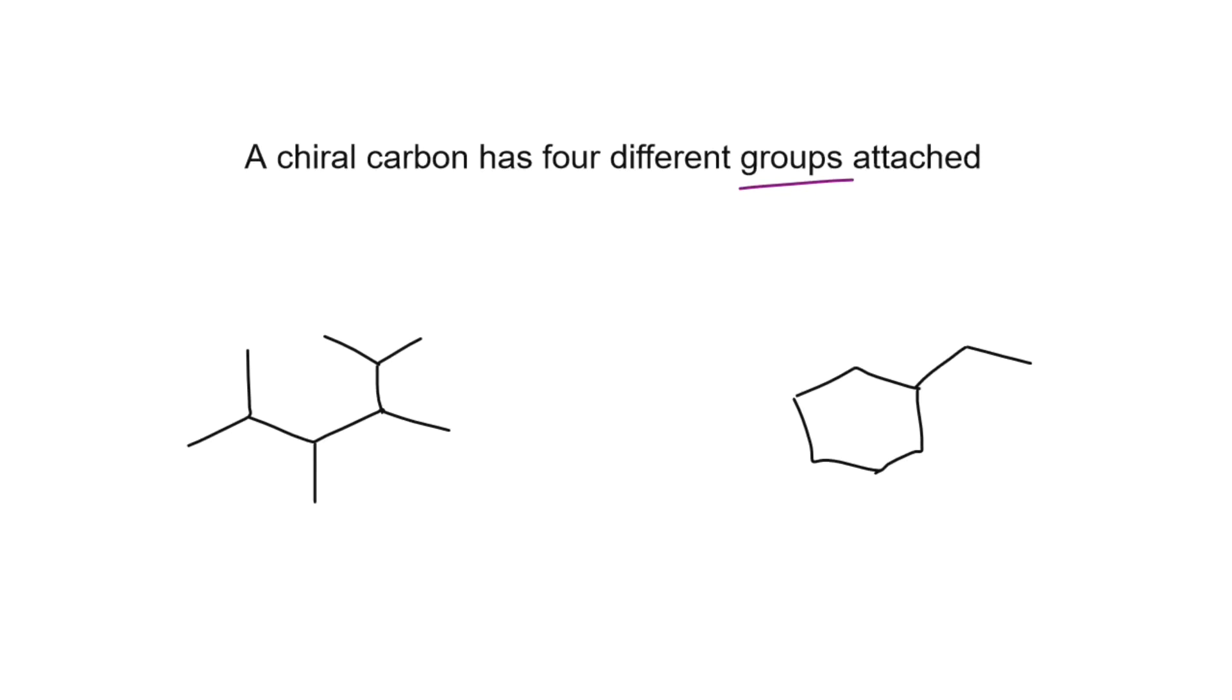So for example, if we want to check to see if this carbon is chiral, we just need to identify or circle the four groups. Notice that the only part that is not circled is the carbon of interest in the middle.